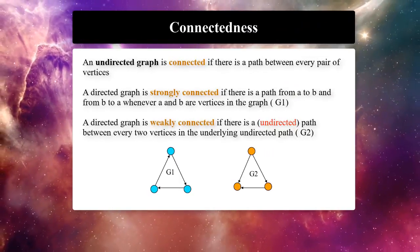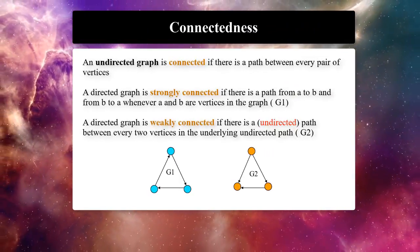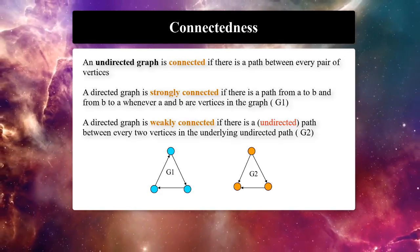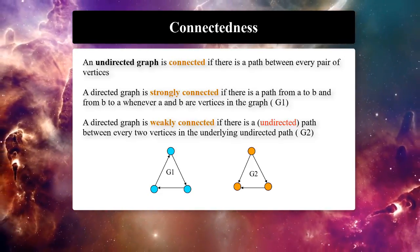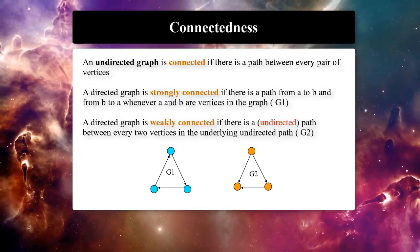An undirected graph is connected if there is a path between every pair of its vertices. A directed graph is strongly connected if there is a path from a to b and from b to a whenever a and b are vertices in the graph.